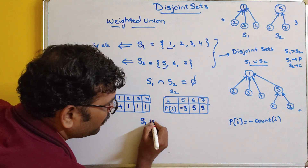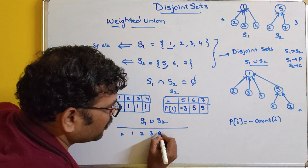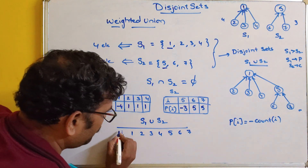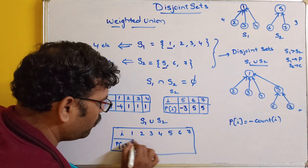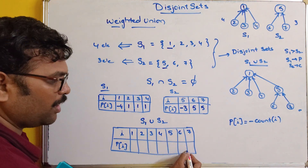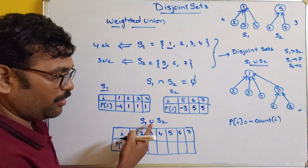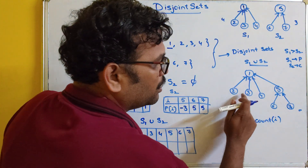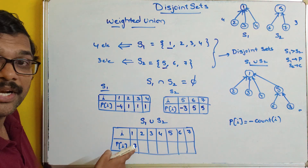Now performing S1 union S2: the elements are 1, 2, 3, 4, 5, 6, 7. We need to write the parent of all these nodes. Parent of 1: after union, total nodes are 1, 2, 3, 4, 5, 6, 7 — total 7 nodes. So parent of 1 becomes minus 7.